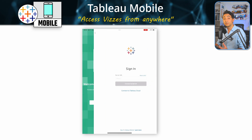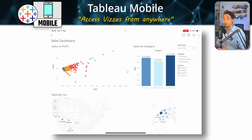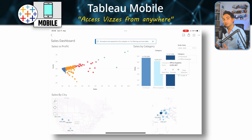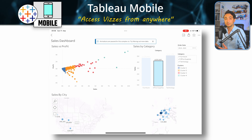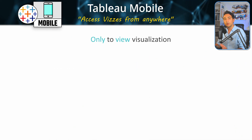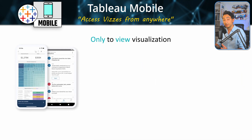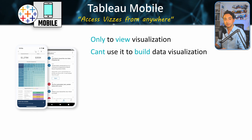Tableau Mobile is a free mobile app that you can download on your smartphone or tablet. You can use it to view and interact with Tableau reports and dashboards published to Tableau Server and Tableau Cloud. You can only use it to view the reports — you cannot use it to create new reports or edit them.